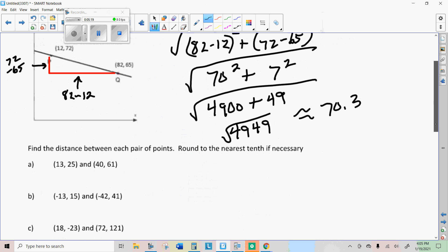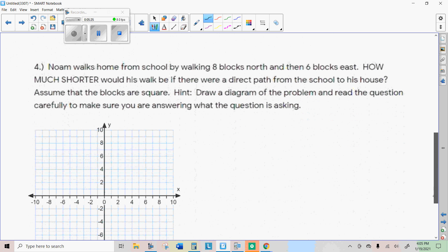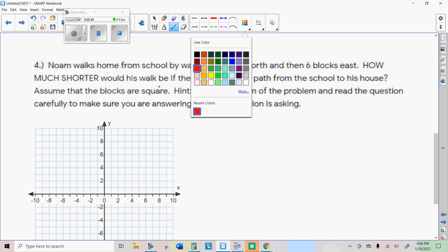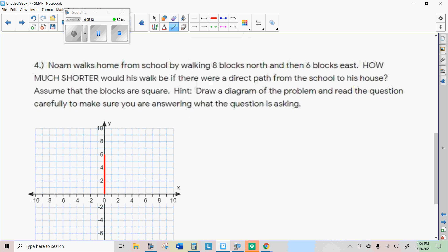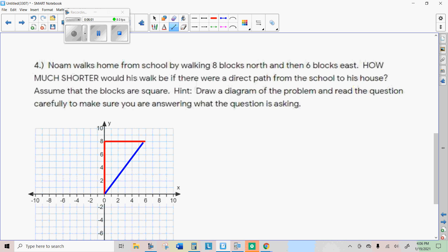All right, so find the distance between each of these using the distance formula. All right, let's use a coordinate grid to help us figure this out. It says, Noam walks home from school by walking eight blocks north and then six blocks east. That would look like this on a coordinate grid. Six blocks north. Let's start at 0,0. Eight blocks north, he said. That would be like that. I just want eight blocks north. And I need to go six blocks east. How much shorter would his walk be if there were a direct path from school to his house? So, in other words, if we could just go like that.